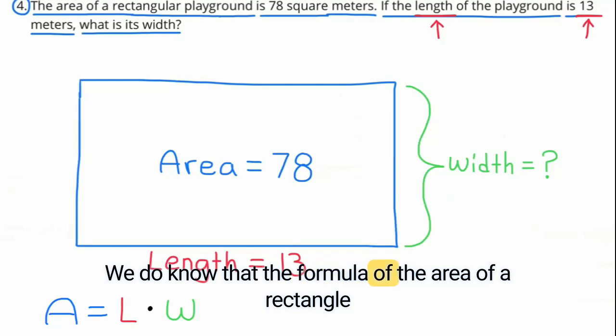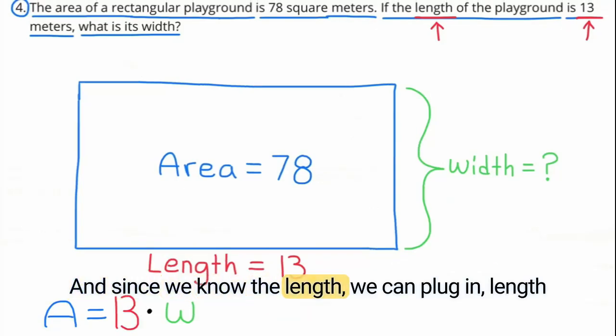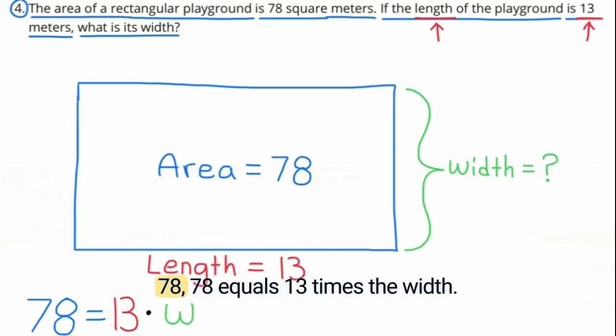We do know that the formula of the area of a rectangle is length times width. And since we know the length, we can plug in length as 13. The area equals 13 times the width. And since we know the area is 78, 78 equals 13 times the width. What number times 13 equals 78?